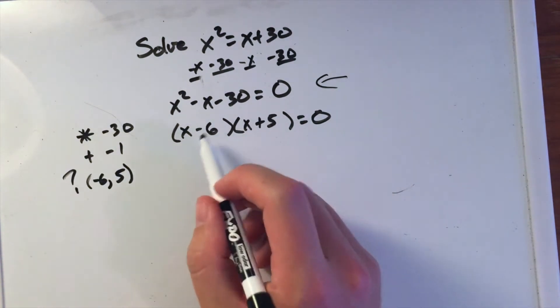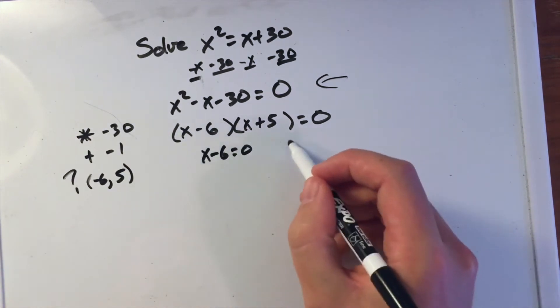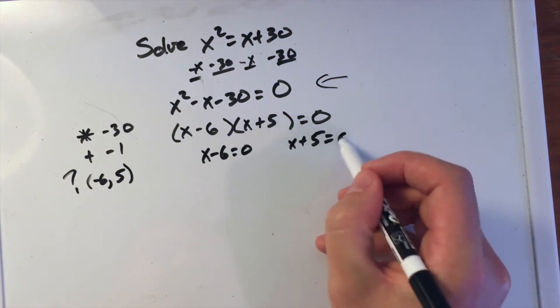Now that we have them separate, we can set each one individually equal to zero: x minus 6 equals 0 and x plus 5 equals 0.